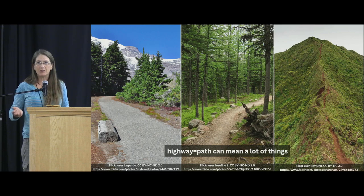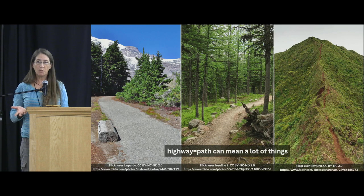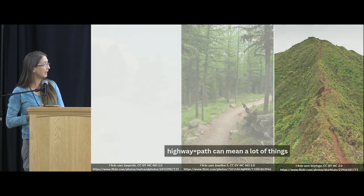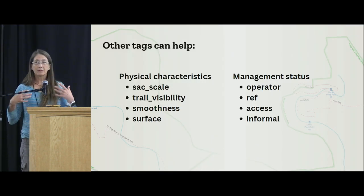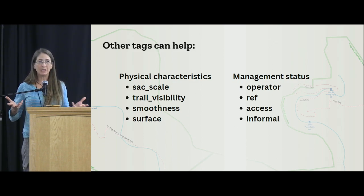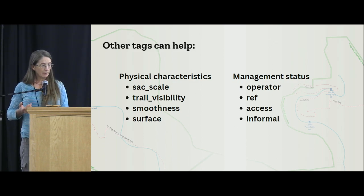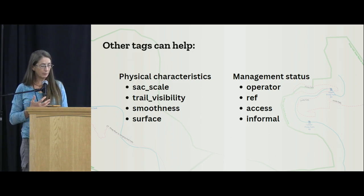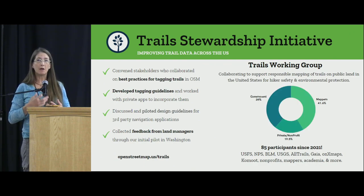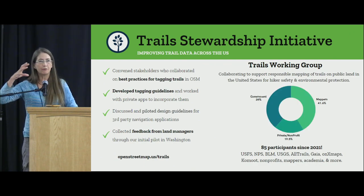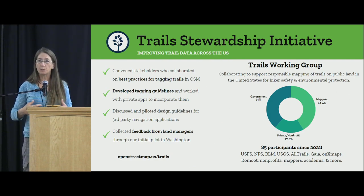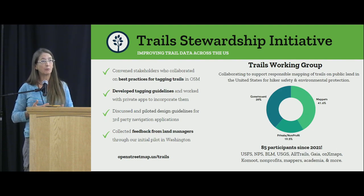'highway=path' is not very descriptive — it just means 'trail.' So when renderers look at that data, what can they do with it? A 'highway=path' can mean many different things. Thinking about different tagging schemas to add to it is important. This is why the trails working group came together and the Trail Stewardship Initiative grew out of that.